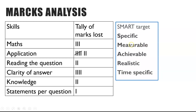Measurable means it has to be something you can actually mark or check that you have improved or completed. Achievable means it's something you can actually get hold of and complete in the time given. Specific means it's an exact activity rather than just generically saying 'I'm going to revise.'